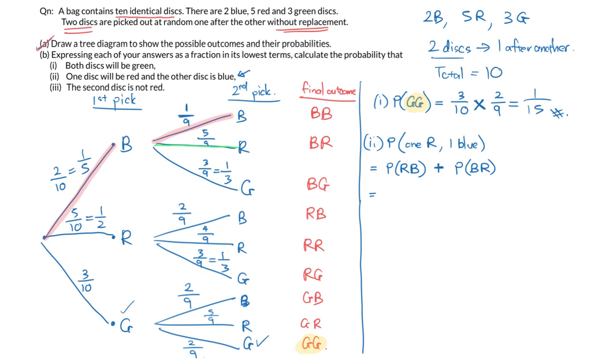So individually, red-blue, where is it? Red-blue is over here. And later on, I need blue-red, which is here. So we're going to calculate them individually. Red-blue, just look along the branches, is simply 1/2 multiplied by 2/9. Or it could be blue-red. So blue-red is 1/5 multiplied by 5/9. And this gives us 2/9.